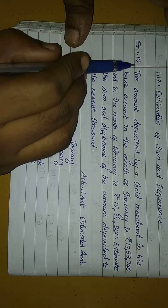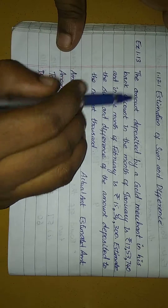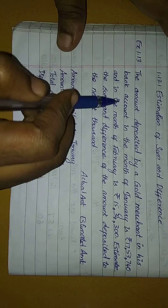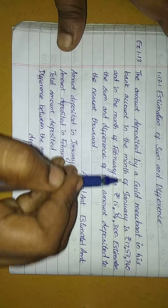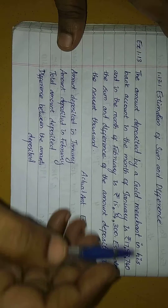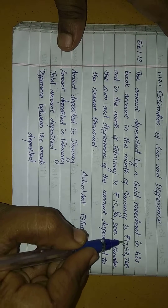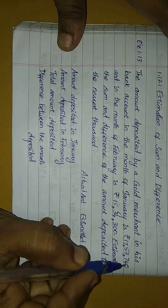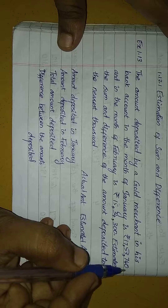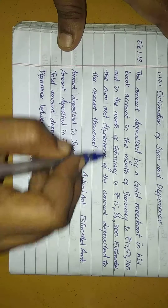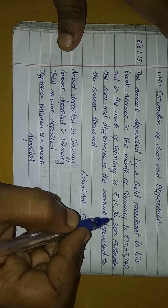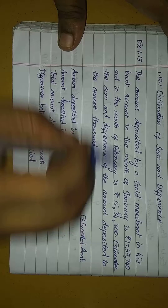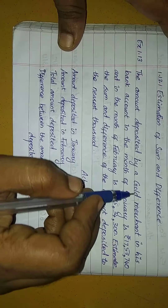Example 1.13. The amount deposited by a gold merchant in his bank account in the month of January is 17,53,740 and in the month of February is 15,34,300.